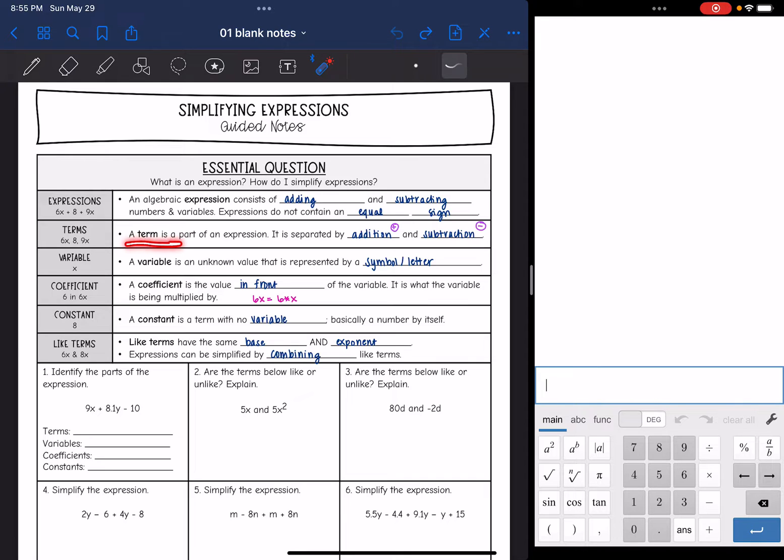We're going to be combining terms that are like. Terms are anything in the expression that's separated by an addition or a subtraction sign. And then we'll also have variables which is just an unknown value. Usually it's represented by a letter like X but it could also be represented by a symbol. And then a coefficient is a value that is in front of that variable. It's what the variable is being multiplied by.